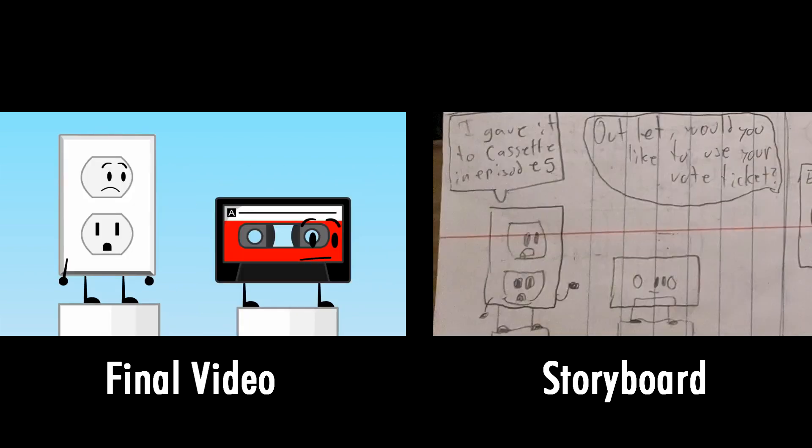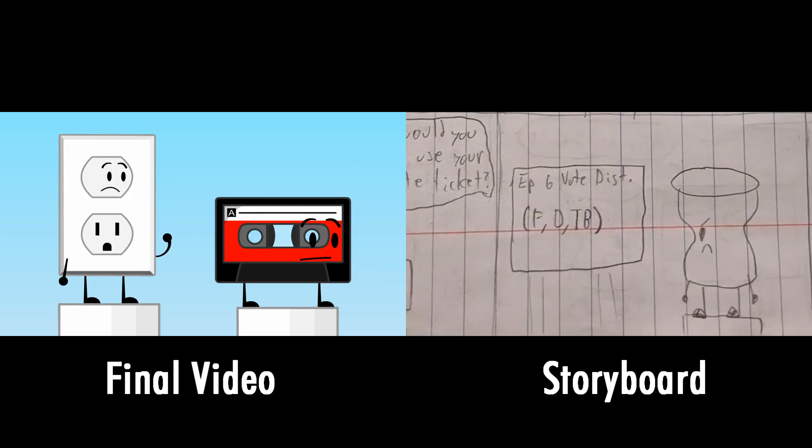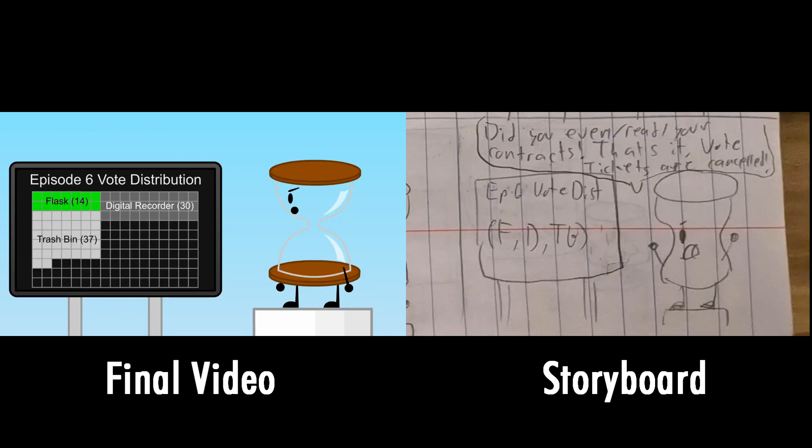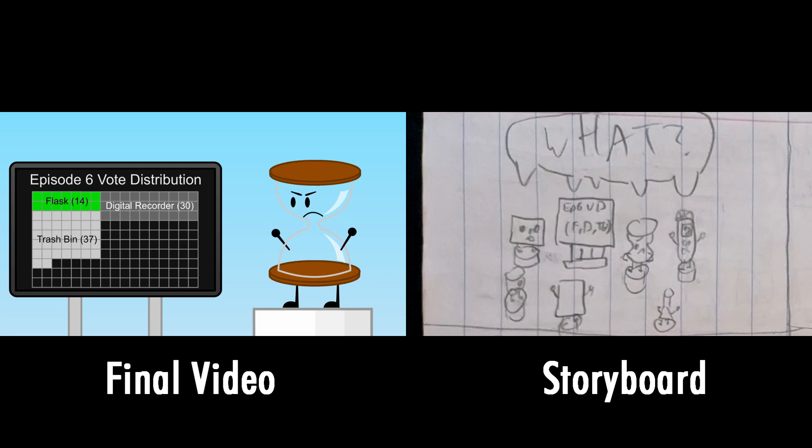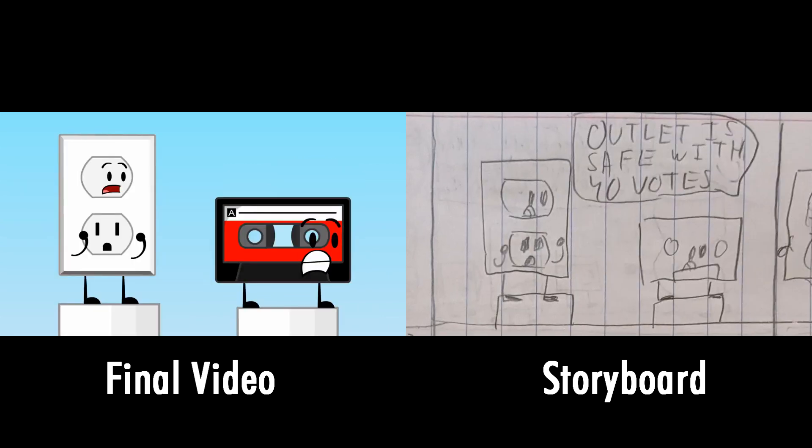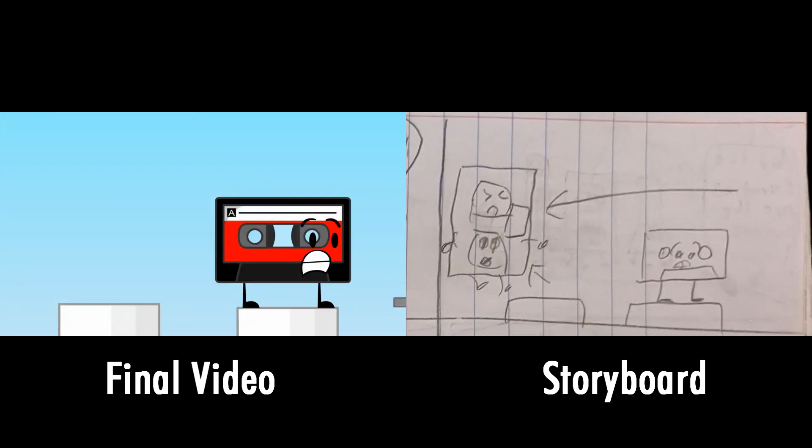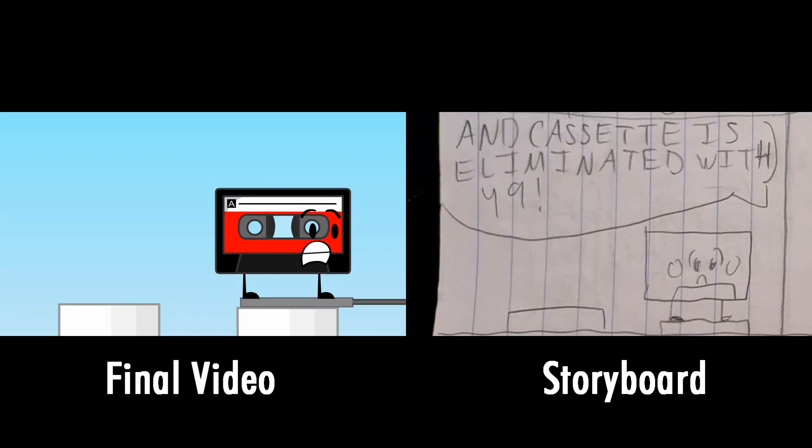Outlet, would you like to use your vote ticket? I gave it to Cassette in episode 5. Did you even read your contracts? That's it. Every vote ticket has been cancelled! What? Outlet is safe with 40 votes. And Cassette is eliminated with 49.